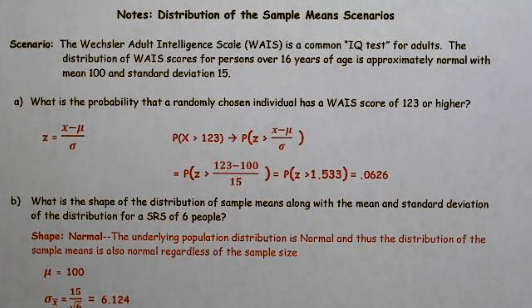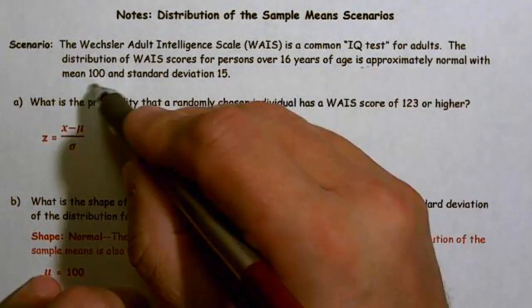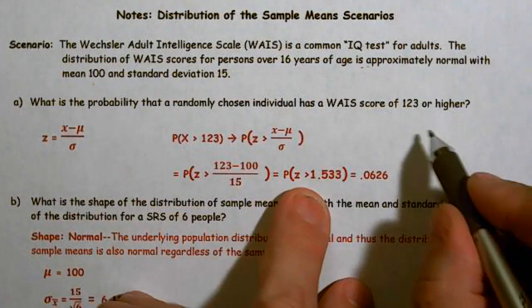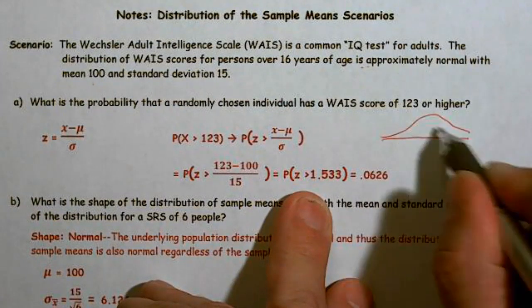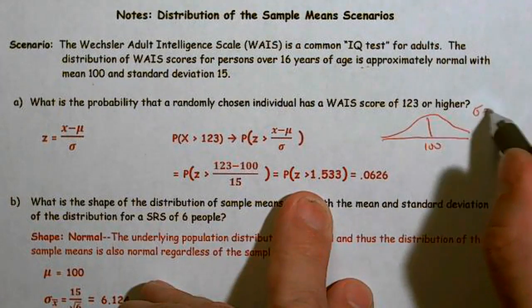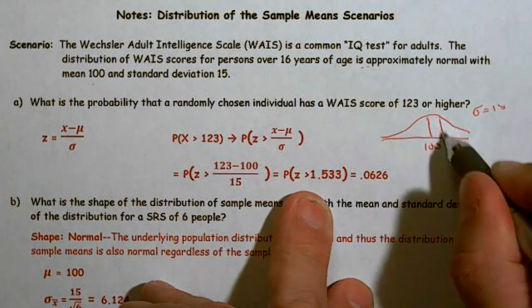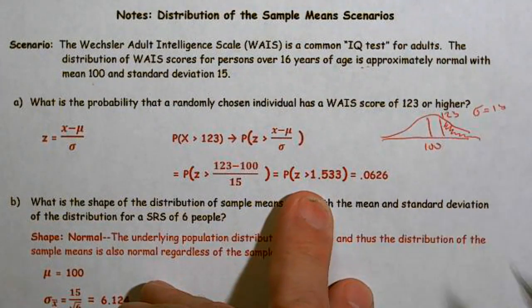The Wechsler Adult Intelligence Scale is a common IQ test for adults. The distribution of scores for persons over 16 is approximately normal — they told us it's normal — with a mean of 100 and a standard deviation of 15. We have μ=100, σ=15, and we want to know the probability of scoring 123 or higher.